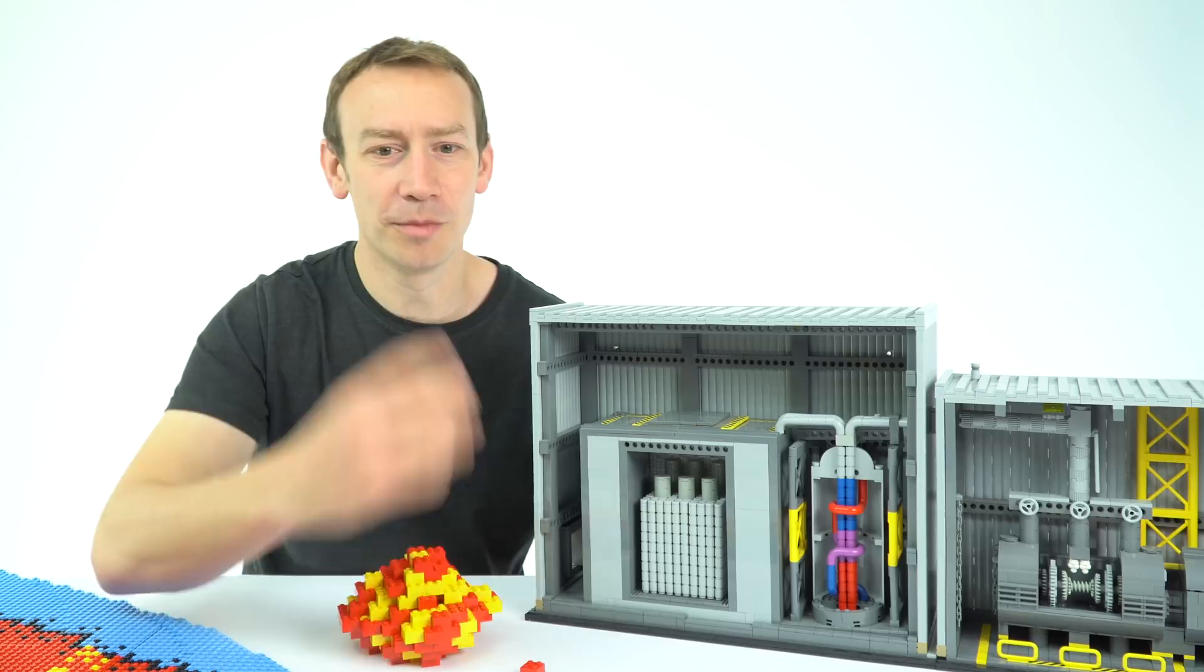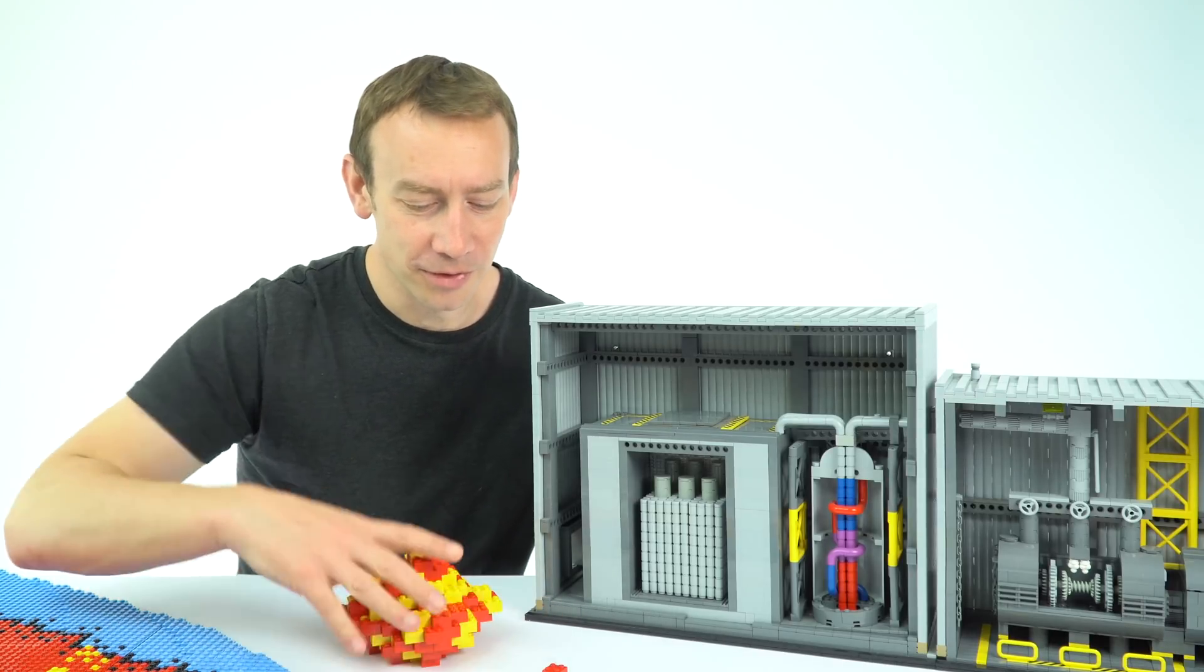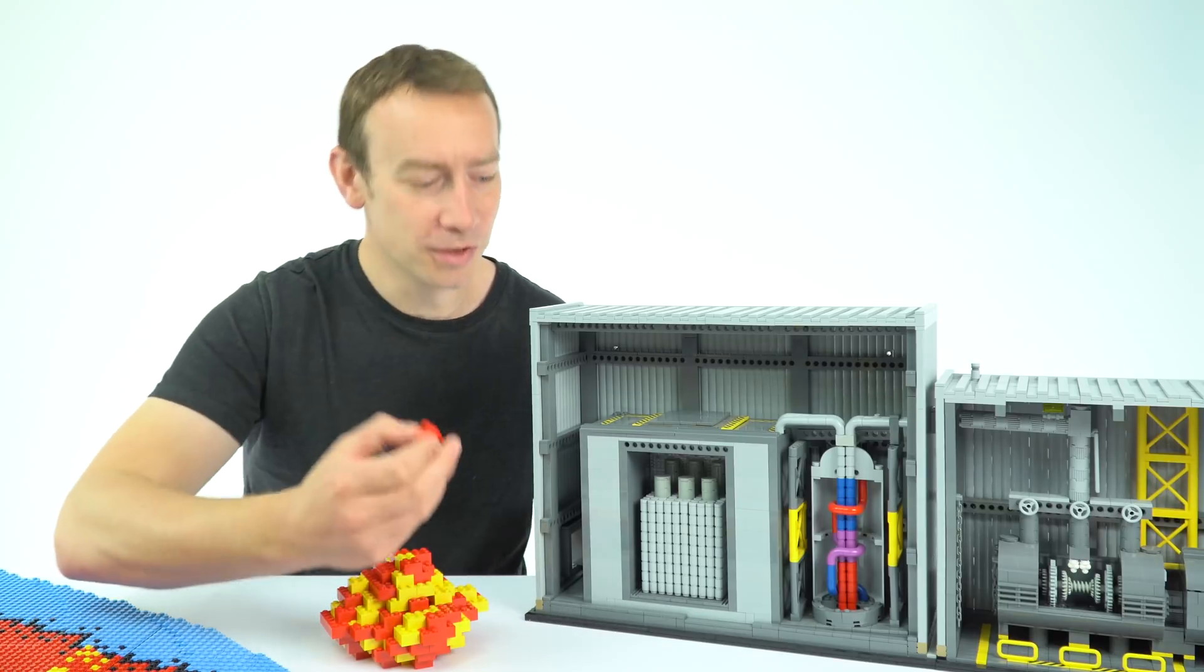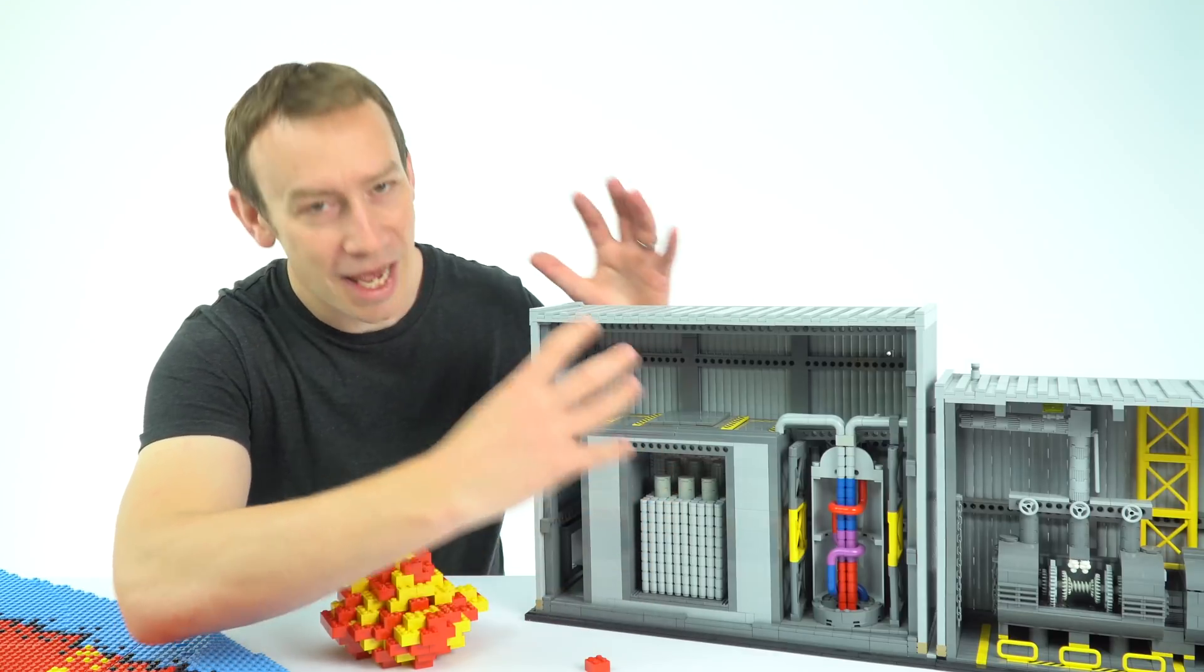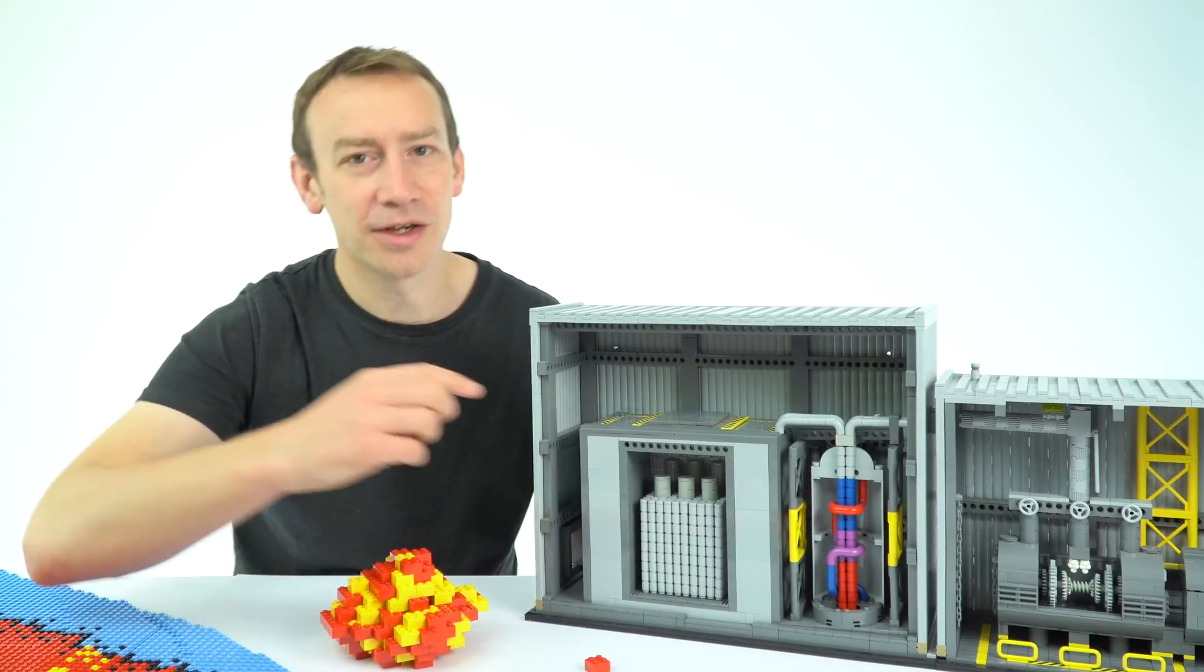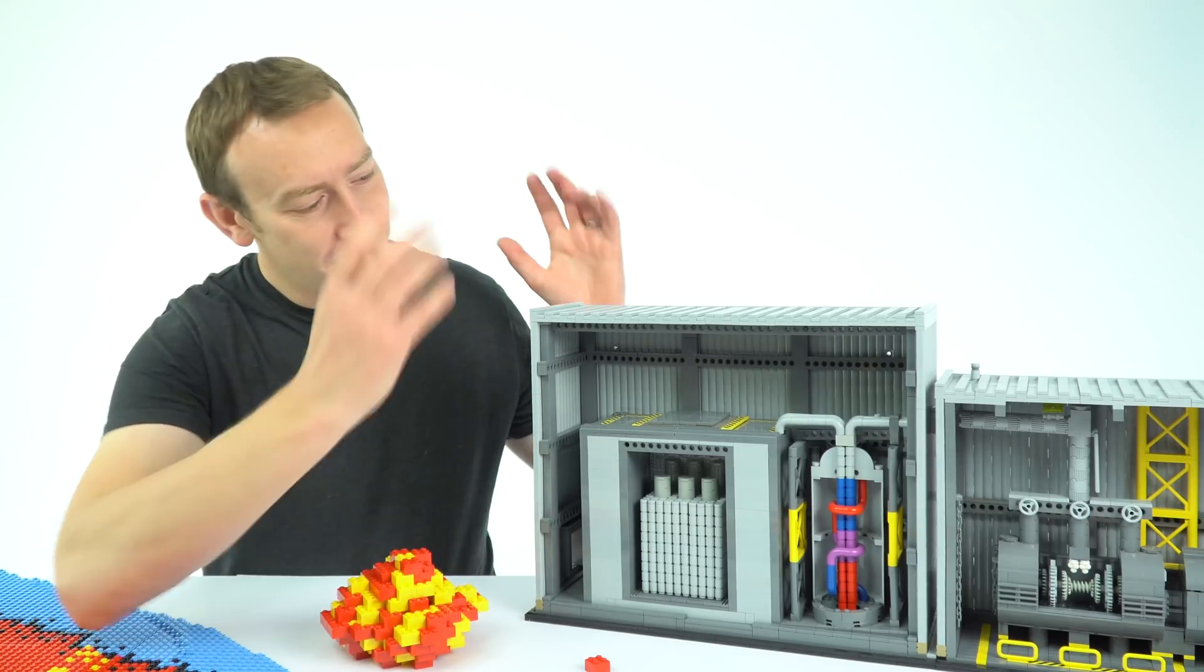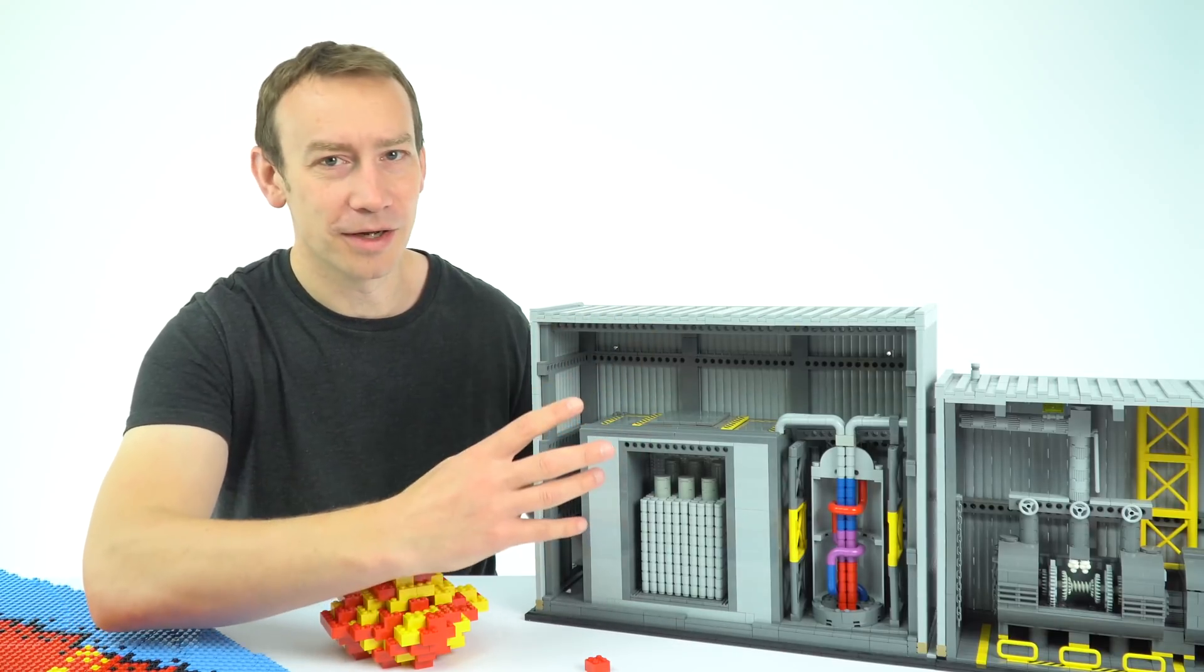We also have things inside which act as moderators and what these do is they slow down the really fast neutrons which are ejected from the atoms which are from the nuclei which are splitting apart. So that is often things like water and also we can use water as a coolant. So the coolant is designed to take the excess heat away from the reactor. It goes through a heat exchanger and that then boils water which turns to steam and that causes turbines to move and generators to then generate electricity. So that is a very simple kind of schematic of how a nuclear fission reactor works.